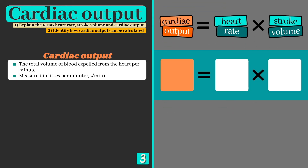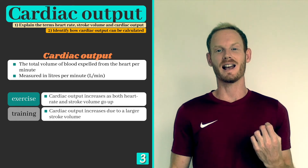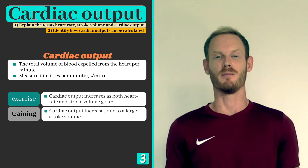For example, if an athlete at rest has a heart rate of 60 beats per minute and a stroke volume of 60 millilitres, we can multiply the two values, giving us a cardiac output of 3,600 millilitres or 3.6 litres per minute. When an athlete starts to exercise, however, both heart rate and stroke volume go up, resulting in an increase in blood and oxygen delivery.